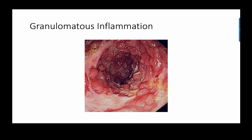Granulomatous inflammation occurs only in chronic inflammatory responses. It can be infectious — such as TB — or result from hypersensitivity reactions like Crohn's disease. Granulomas are tightly packed collections of macrophages and may or may not contain necrosis. They form when neutrophils — the first responders to infection — fail to kill the pathogen. Large numbers of macrophages are then recruited; monocytes circulate in the bloodstream and morph into macrophages upon entering tissue, where they are stronger, larger, and longer-lived than neutrophils.